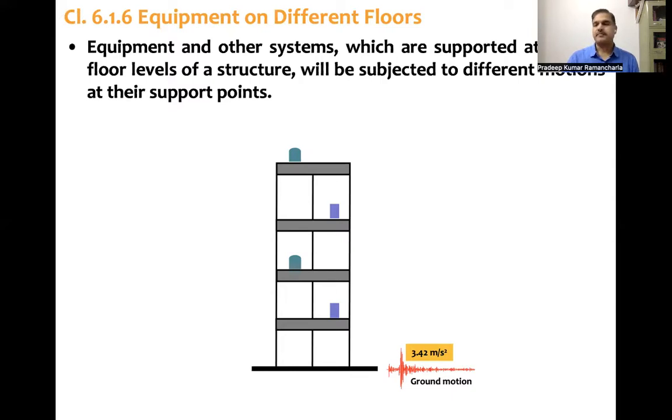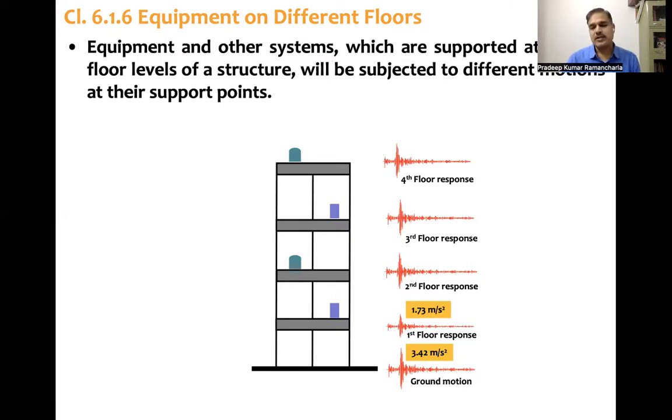Now when this building is analyzed using a time history analysis, then each floor acceleration, that is response acceleration, is computed. So first floor response, second floor response, third floor response and fourth floor acceleration response. First floor acceleration response, peak acceleration at the second floor is 3.36, peak acceleration at third floor is 4.3, and peak acceleration at fourth floor is 4.76.